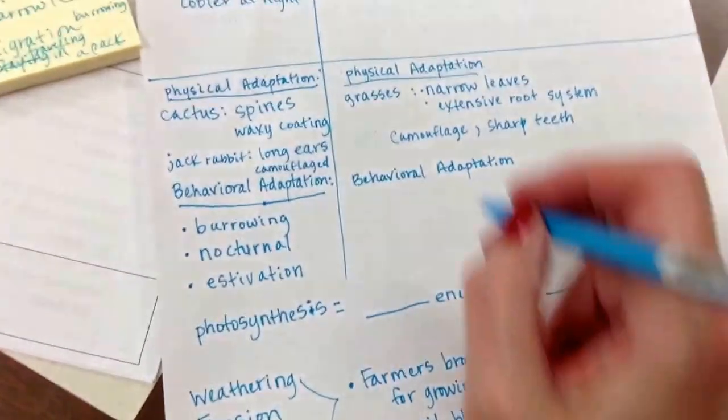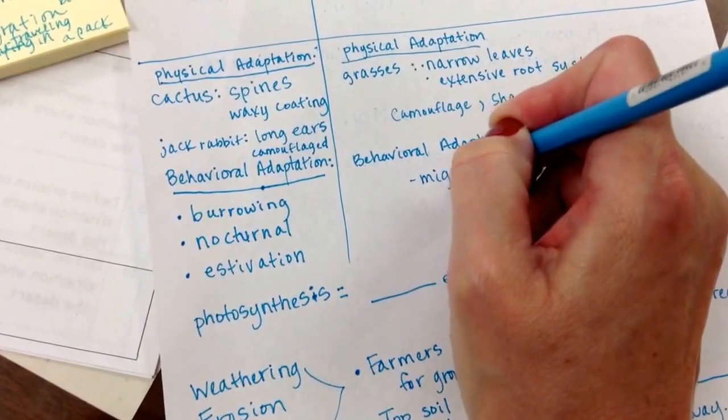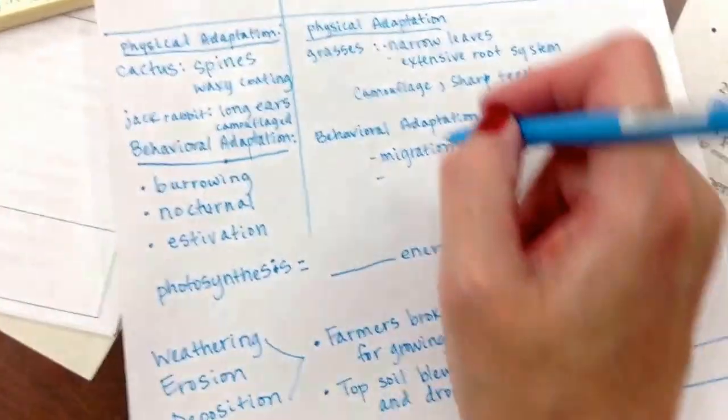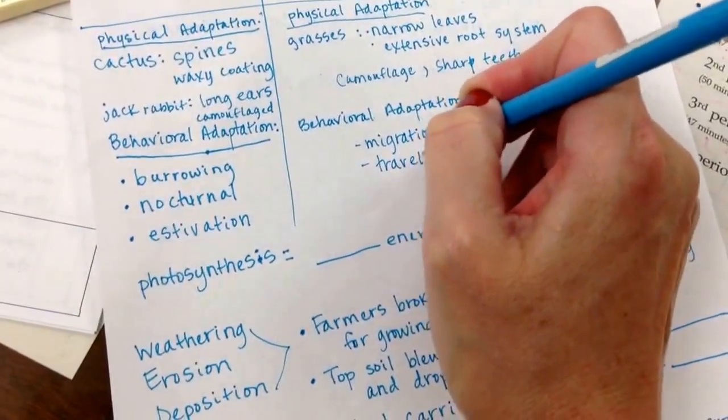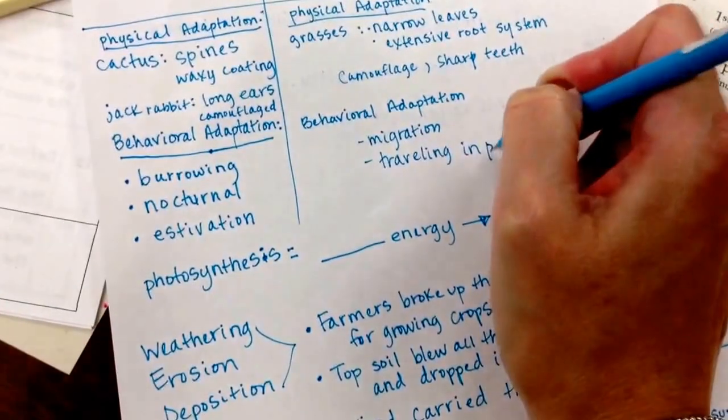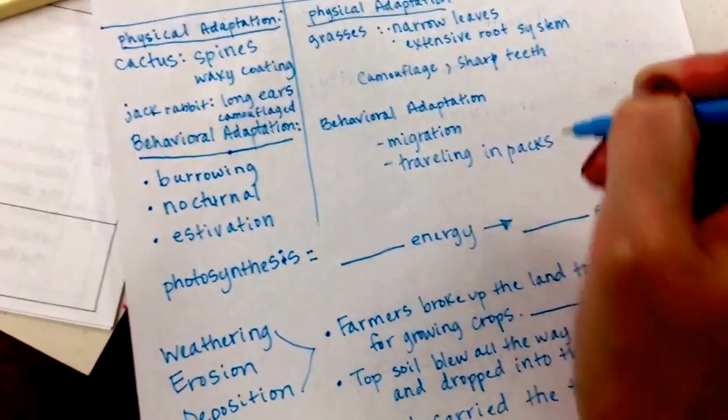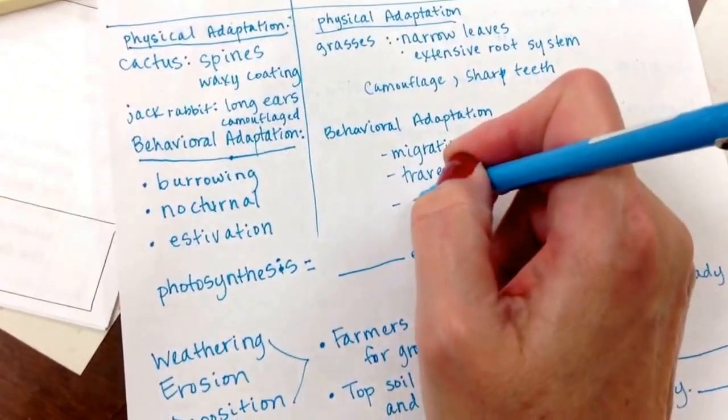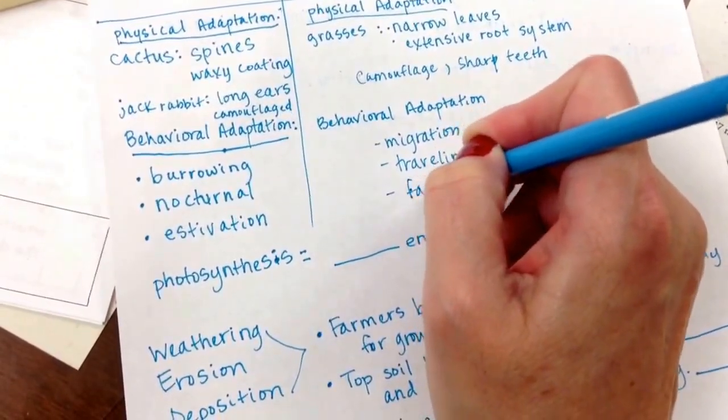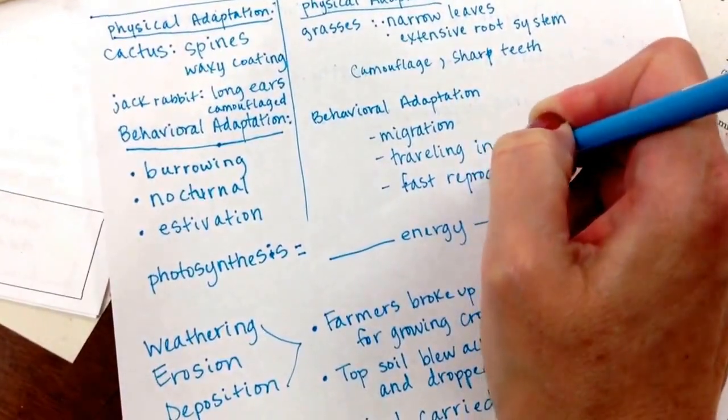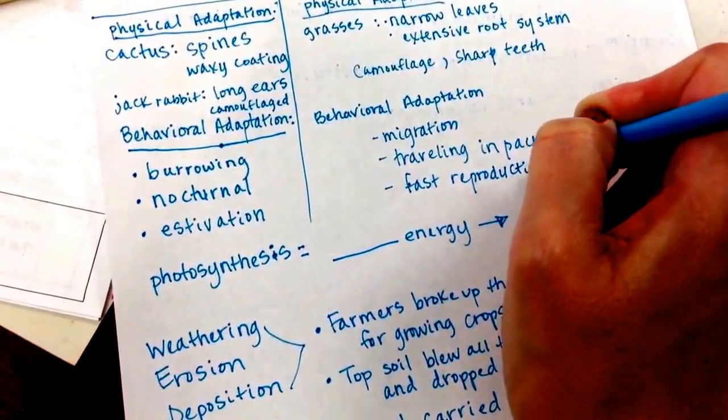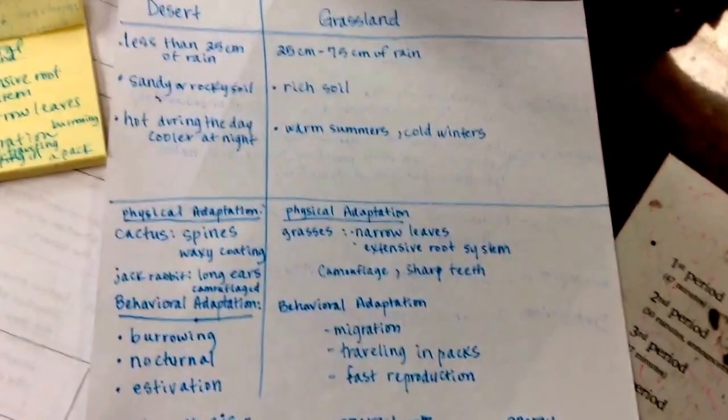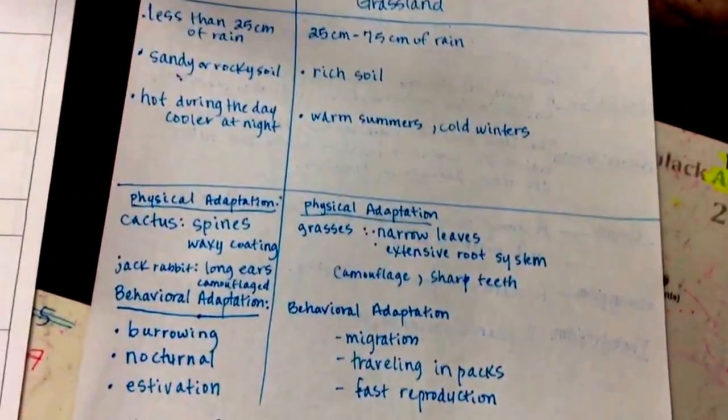There could be several things on an organism that helps it survive. Well, that's enough for physical adaptation. For behavioral, you're going to have migration. You're going to have traveling in packs. Because these are going to be actions that help them survive in the desert. On the grasses, they have a fast reproduction so the grasses can grow back quickly. So those are some examples of the desert and grassland characteristics and adaptations.